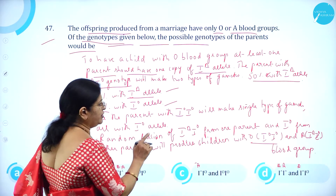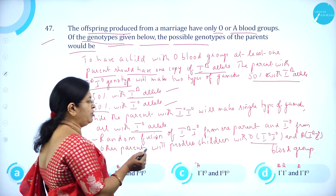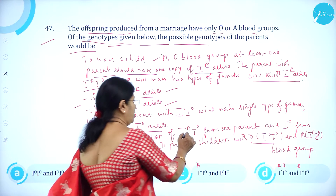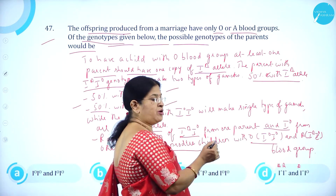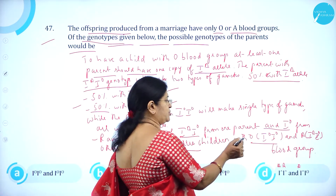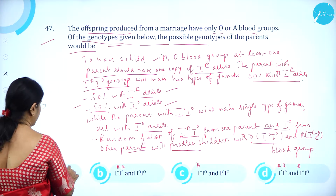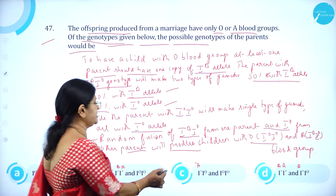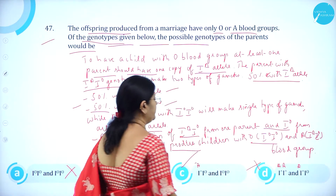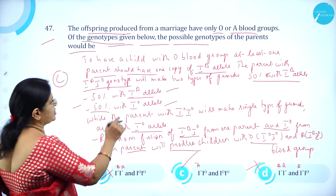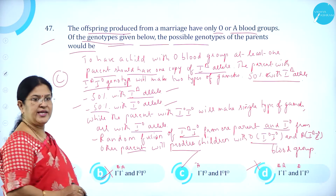To have a child with O blood group, at least one parent should have one copy of Iᴬ Iᴼ. The parent with Iᴬ Iᴼ genotype makes two types of gametes — 50% with Iᴬ and 50% with Iᴼ — while the parent with Iᴼ Iᴼ makes only Iᴼ gametes. Random fusion produces children with O (Iᴼ Iᴼ) and A (Iᴬ Iᴼ). So the genotypes of the parents are Iᴬ Iᴼ and Iᴼ Iᴼ — option C is correct.